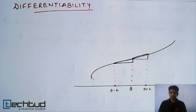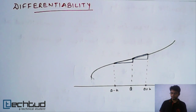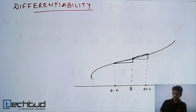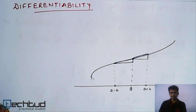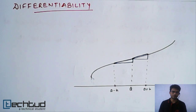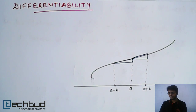Hello everyone, welcome back to tech2.com. In this lecture we will understand differentiability of a function. This is very similar to continuity. Differentiability or derivative of a function is basically the slope of that function at that point.